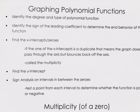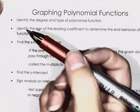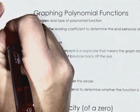Is it an even or odd function, and which way do my ends go? If it's an odd function with a positive leading coefficient, it's quadrants one and three. If it's a negative coefficient it'll be two and four. Those sorts of things. You have to find the x-intercepts next.